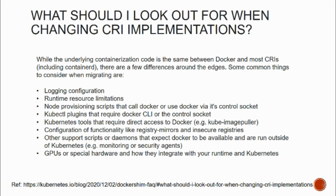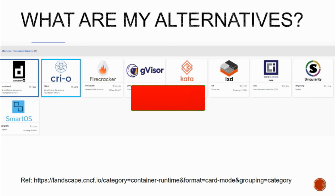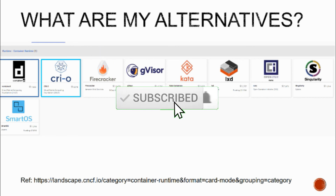What are your alternatives? From the CNCF landscape, you have lots of alternatives: containerd, CRI-O, Firecracker, Open runC, SmartOS, Kata, and others. On this channel we're going to come up with videos explaining how you can replace the Docker runtime with any of these runtimes, with practical demos. Hit the subscribe button and give a thumbs up if you're already liking this video.